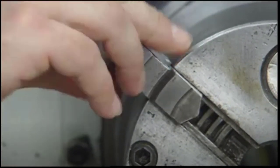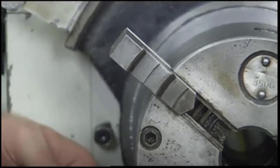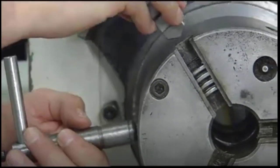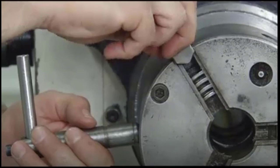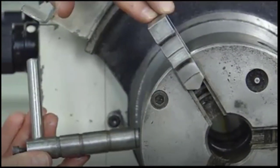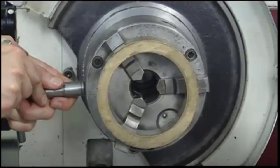Next, slide jaw number one into slot number one and rotate the socket until the jaw engages the scroll. Then rotate the socket until the scroll reaches slot number two and mount jaw number two in the same manner. Repeat this process for jaw number three. Once that's finished, the jaws are ready to grip a large diameter workpiece.